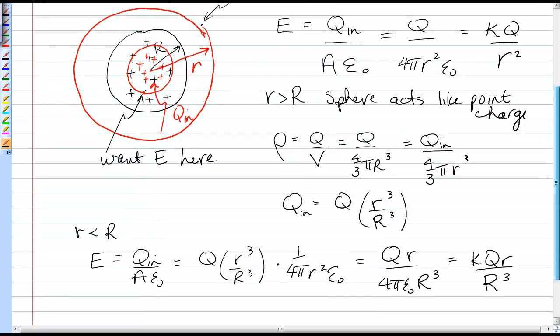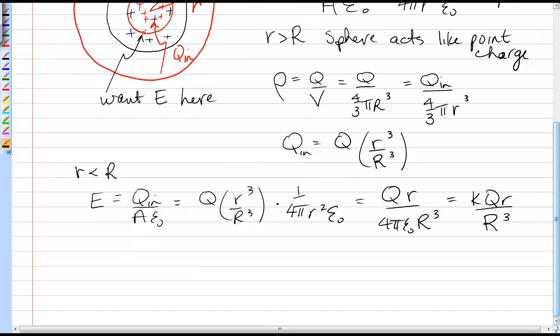Remember, capital R is a constant, small r is a variable. So, for radii less than the radius of the sphere, in other words, inside the sphere, E is proportional to r. It's a linear function.